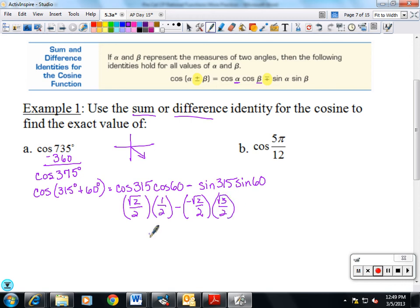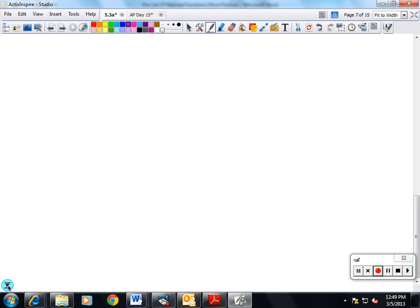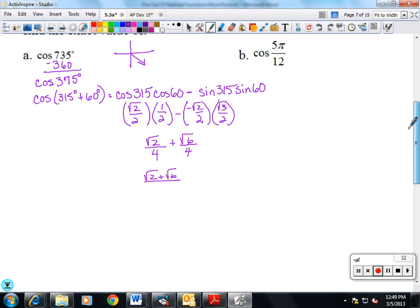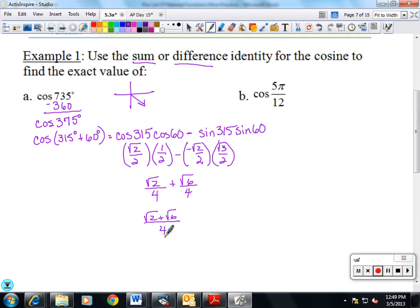Just simplify it a little bit. That'll be the square root of 2 over 4 plus the square root of 6 over 4. So my answer is the square root of 2 plus the square root of 6 over 4.